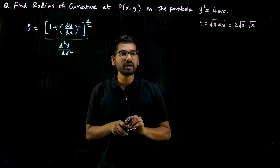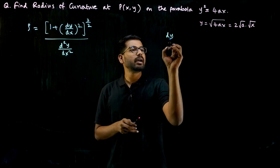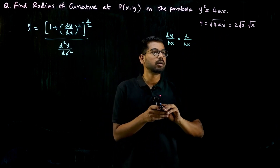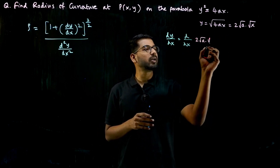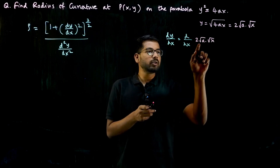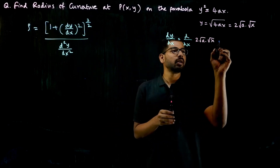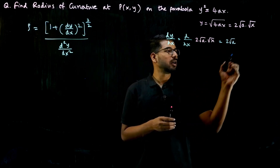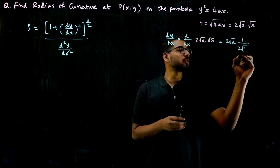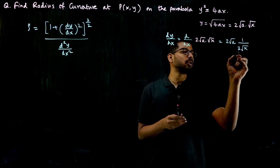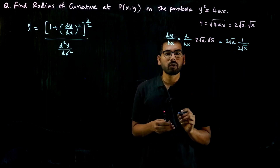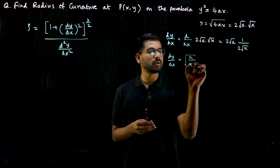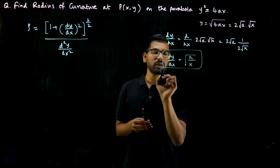Now what I need to find is dy/dx. So dy/dx = d/dx of 2·√a·√x. Since 2·√a is a constant, it comes outside. The differentiation of √x is 1/(2√x). So the 2s cancel and we get dy/dx = √a/√x, which equals √(a/x).